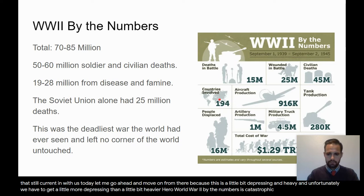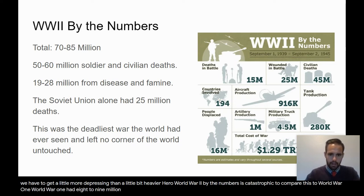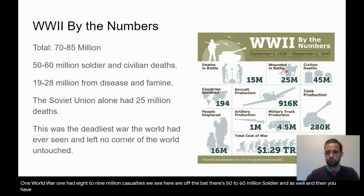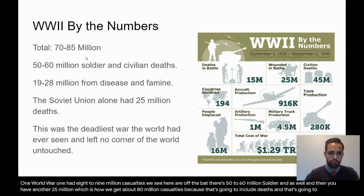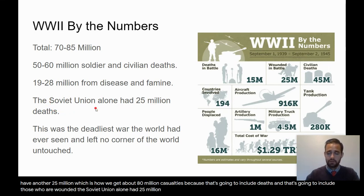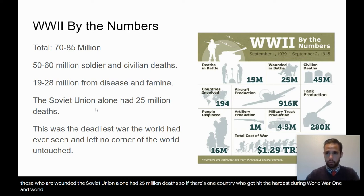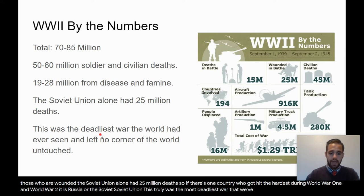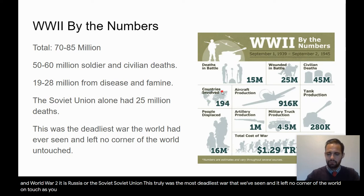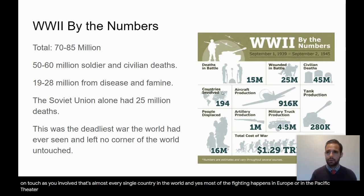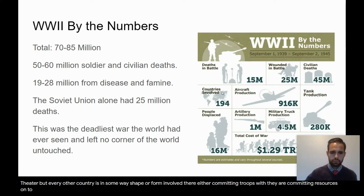World War II by the numbers is catastrophic. To compare this to World War I, which had 8 to 9 million casualties — we see right off the bat there are 50 to 60 million soldier and civilian deaths in World War II, and then another 25 million wounded, giving us about 80 million casualties total. The Soviet Union alone had 25 million deaths. If there's one country that got hit the hardest during both World War I and World War II, it is Russia or the Soviet Union. This truly was the deadliest war we've seen, with 194 countries involved — almost every single country in the world.